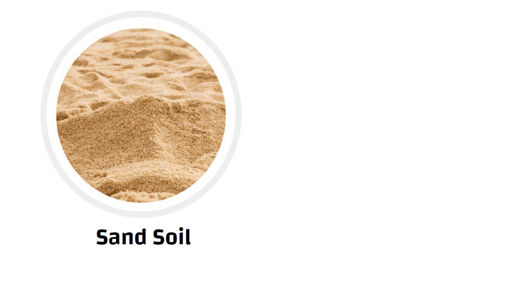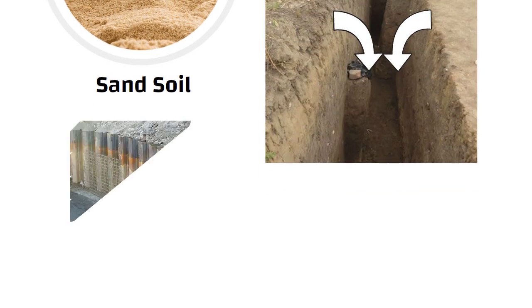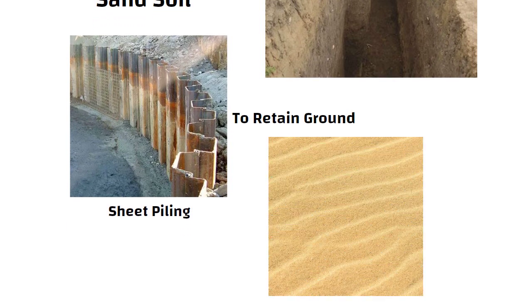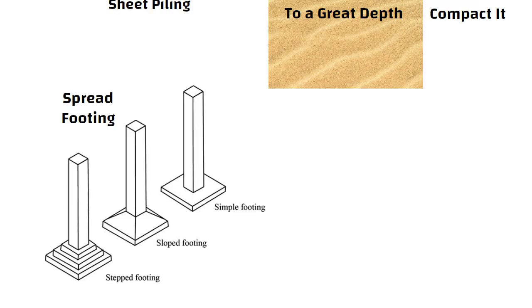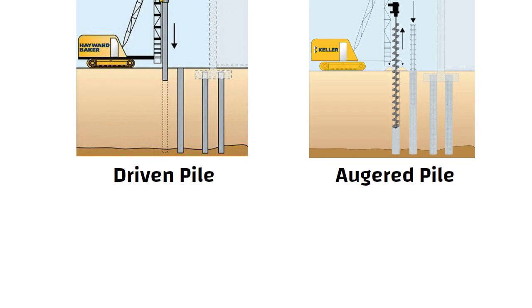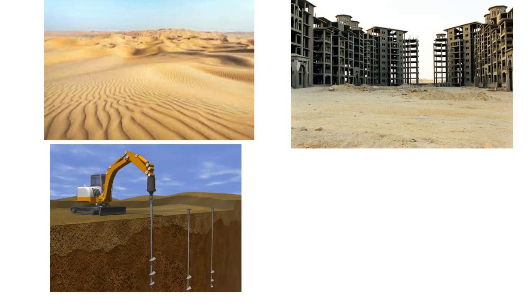Sandy soil: when sand is damp, compacted, and uniform, it holds together reasonably well. But trenches may collapse, and so sheet piling is often used to retain the ground in trenches until the concrete is poured. If loose sand extends to a great depth, it is recommended to compact it and use spread footing. Alternatively, raft, driven pile, or augured pile can be selected without the use of compaction energy. In desert soils, multi-storied buildings usually have pile foundations, especially driven piles or augured cast-in-situ piles.